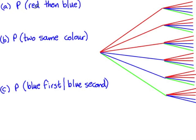The probability that I take a red marble then a blue marble: I look at how many branches go red then blue, and there are six of these out of the sample space of 30.